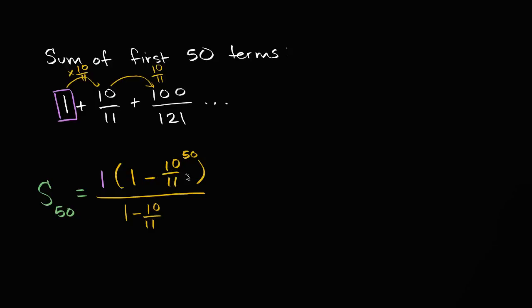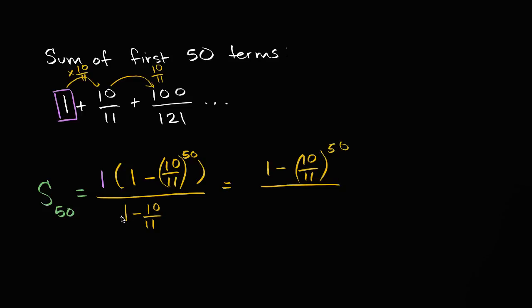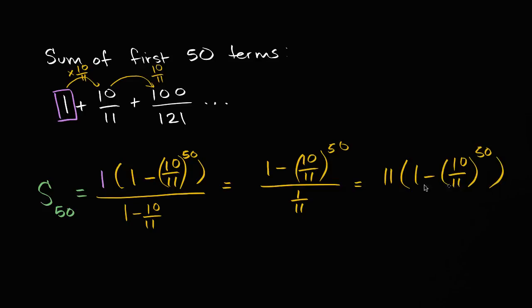I'm not going to solve it completely, but we can simplify this a little bit. This is going to be one minus — let me put parentheses here to make sure we're not just taking 10 to the 50th power — so one minus 10 elevenths to the 50th power, over 11 elevenths minus 10 elevenths, which is one over 11. So this is equal to 11 times one minus 10 elevenths to the 50th power. You could simplify further, but at this point it is just arithmetic.